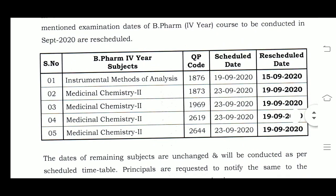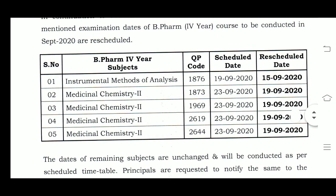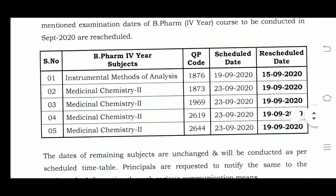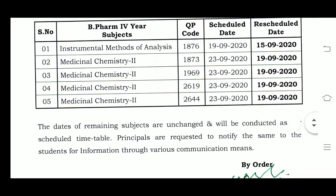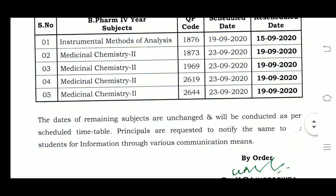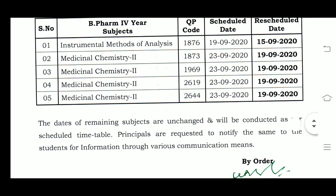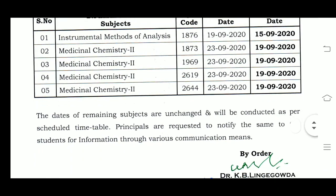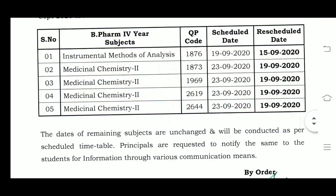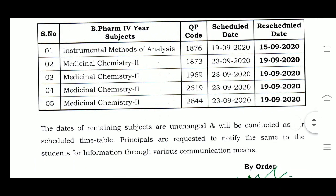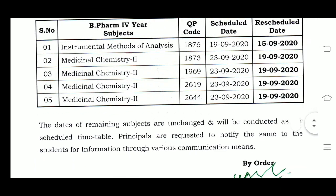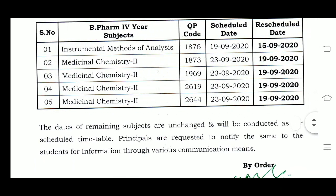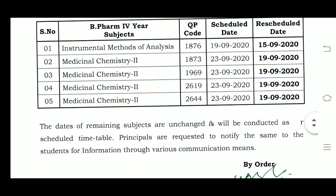Medicinal Chemistry 2 — QP codes are 23, 19, 20, 20, 19, 20, 20. The QP code is the same for this subject as well.